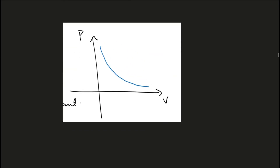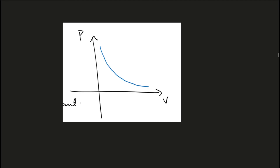This graph is for an ideal gas. It shows the relationship between pressure and volume when all other things — such as the mass of the gas, number of moles, and temperature — remain constant. Pressure and volume are inversely proportional to each other, so if volume doubles, pressure will halve; if volume triples, pressure will divide by a factor of three.